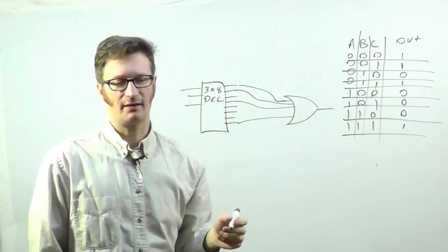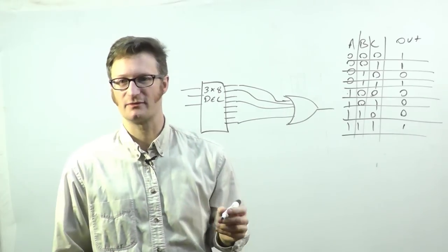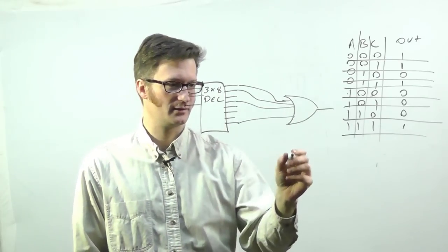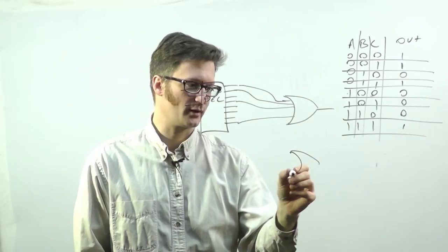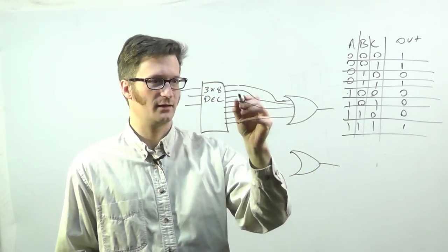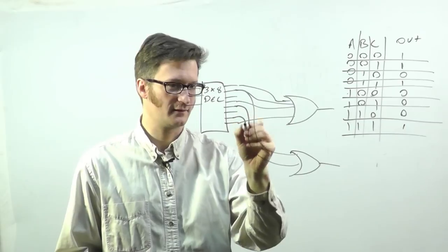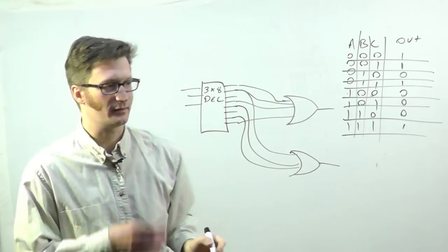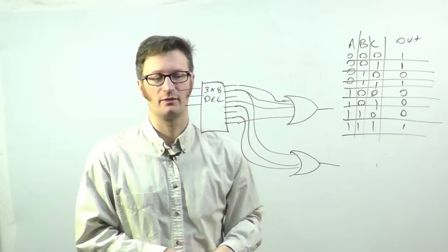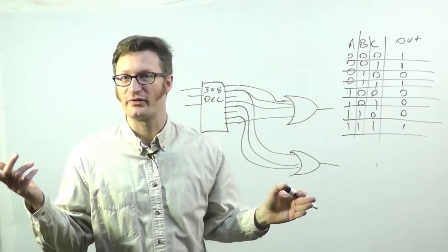Now, let's say that I actually, I wanted to get another function from these same inputs. Well, I could just add another OR gate, and there we go. Now, now I've got another function. So, how this might be useful.